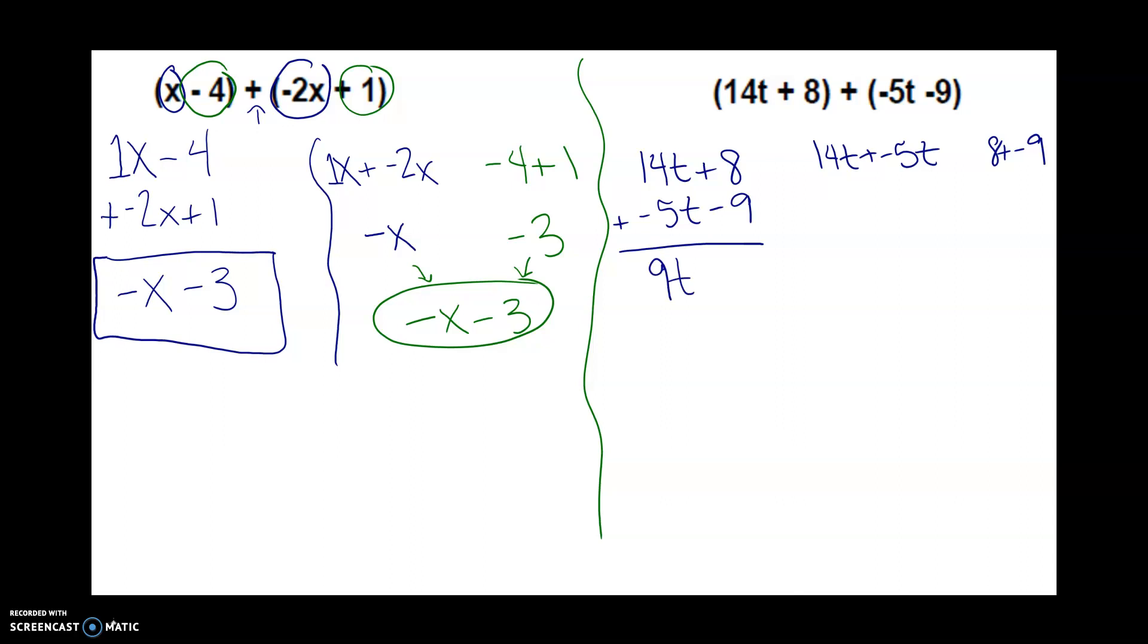8 and negative 9, the 9 is bigger by 1. So minus 1 or negative 1. The same thing over here. 14t and negative 5 is 9, 8 and negative 9 is a negative 1. So 9t minus 1, or 9t plus a negative 1.